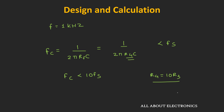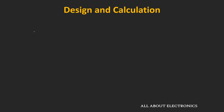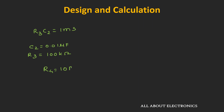Now let us select the values. Since R3·C2 must equal 1 ms, let C2 = 0.01 µF, which gives R3 = 100 kΩ. To satisfy the condition R4 ≥ 10·R3, the value of R4 should be 1 MΩ. Using these values we should get a triangular wave of 1 kHz frequency.